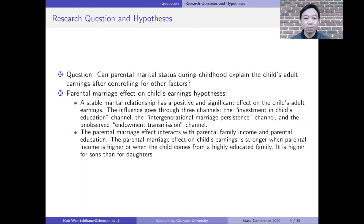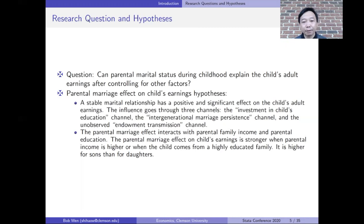This inference goes through three channels: the investment in child's education channel, the intergenerational marriage persistence channel, and the unobserved endowment transmission channel. The parental marriage effect interacts with the parental income effect and the parental education effect, and they reinforce each other. The parental marriage effect on child's earnings is stronger when parental family income is higher or when the child comes from a highly educated family.